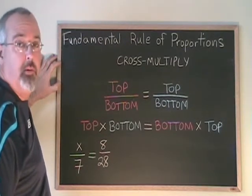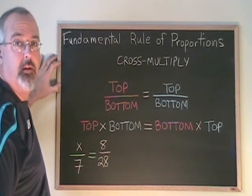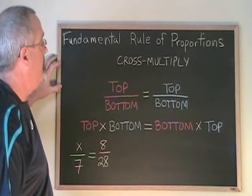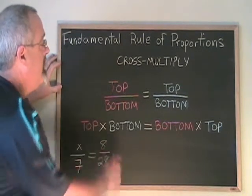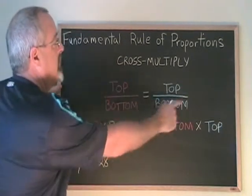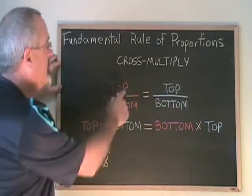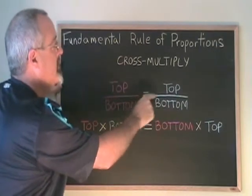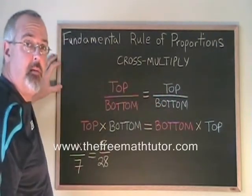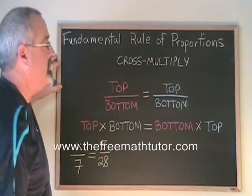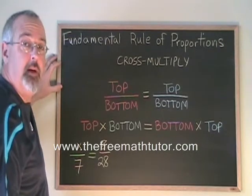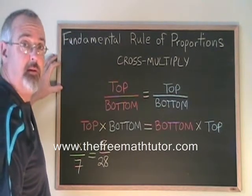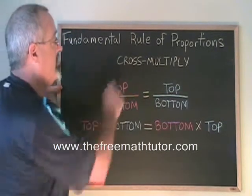The fundamental rule of proportions means that we have to cross multiply to solve them. This is a model of what a proportion looks like — it looks like a fraction, an equal sign, and another fraction. Proportions can be used to solve a lot of math problems, and they're very easy to solve, so long as we know how to cross multiply.